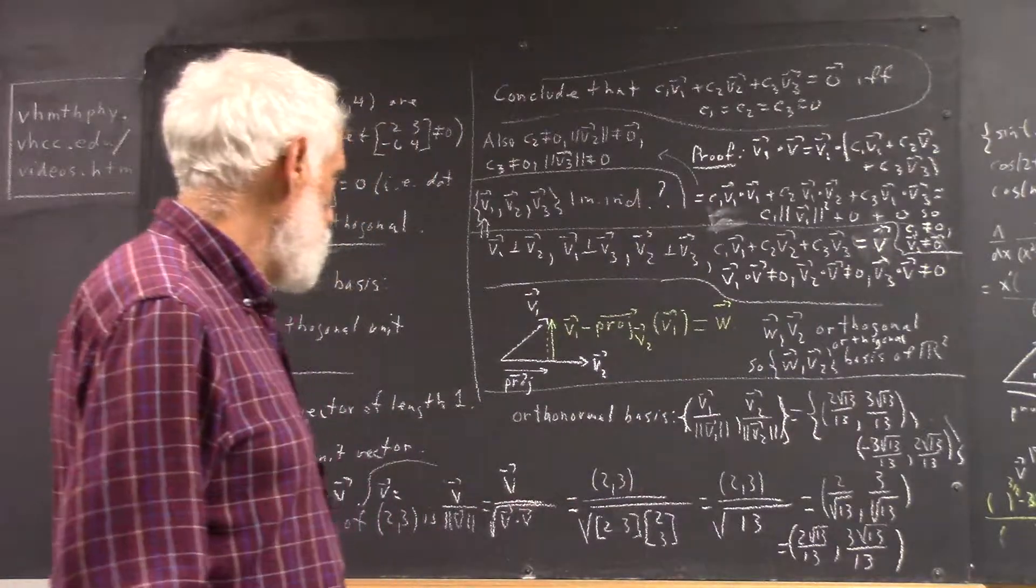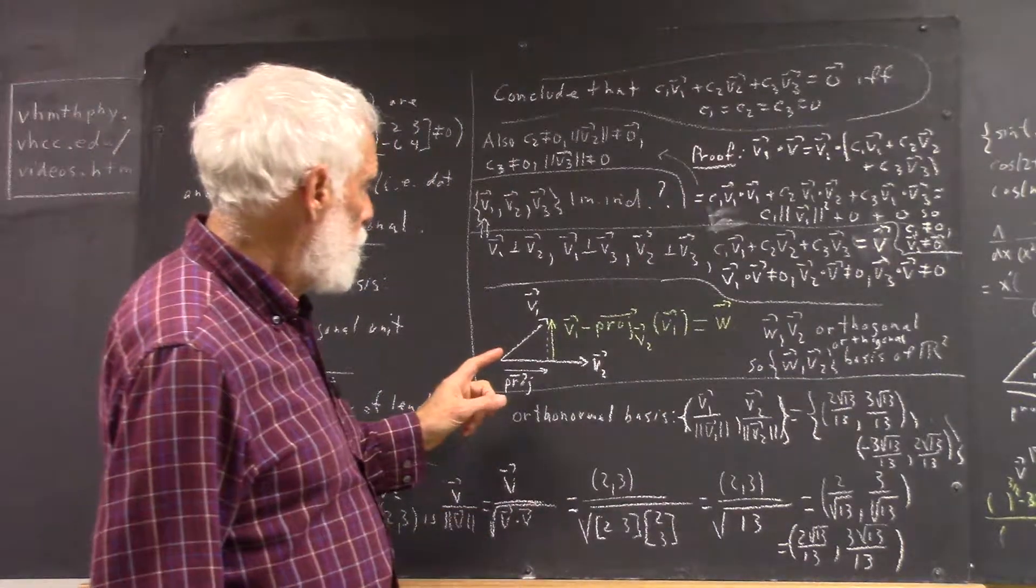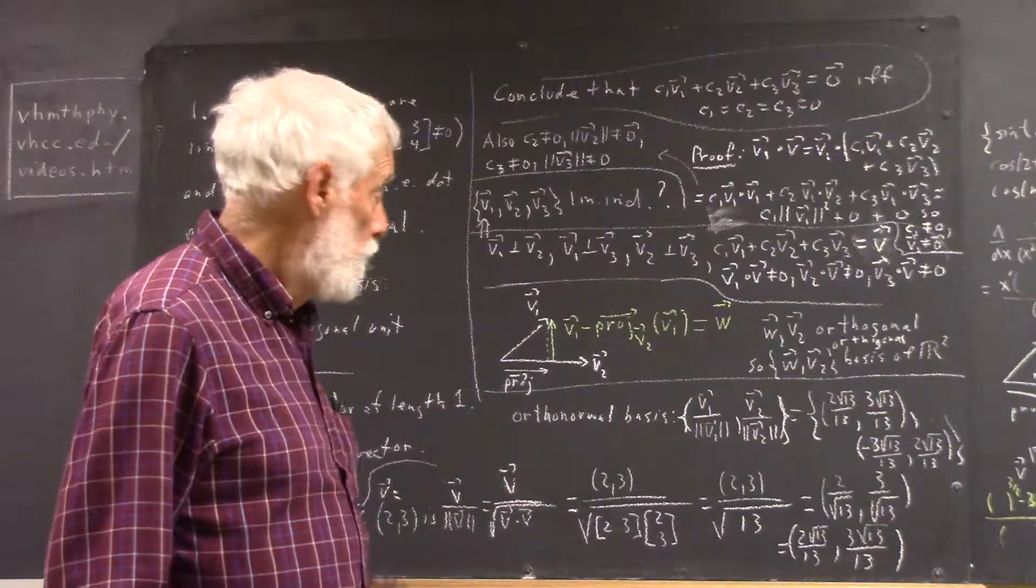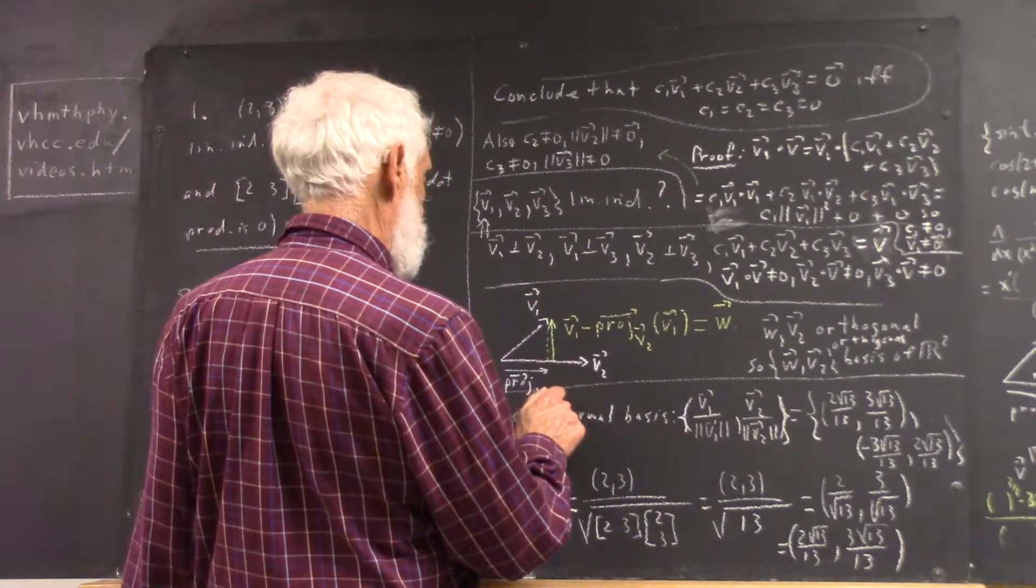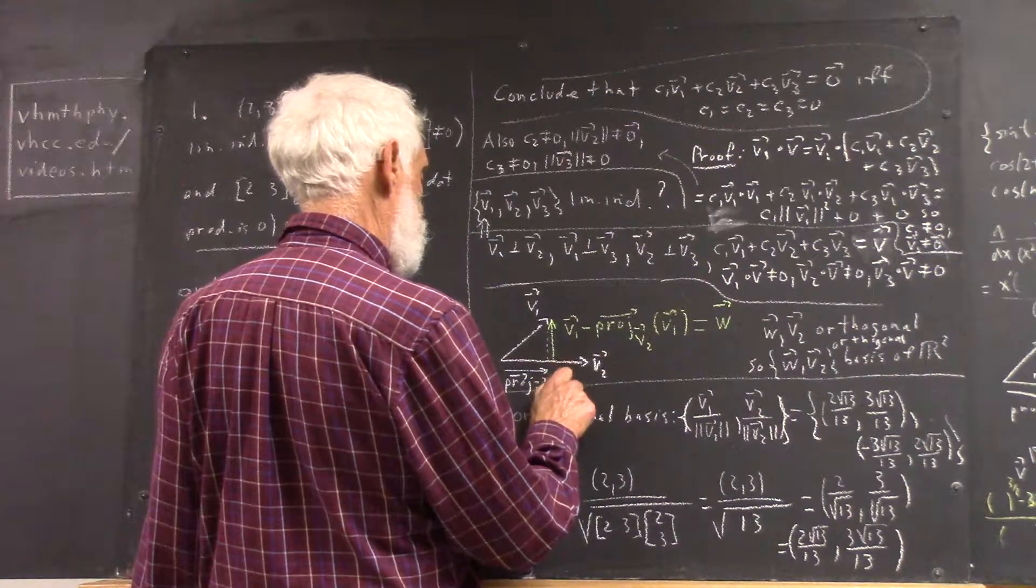The idea we have here that we've already seen is that if you project vector V1 on V2, so, here's your projection, I didn't take time in class to write it up, but this is a projection on V2 of V1.